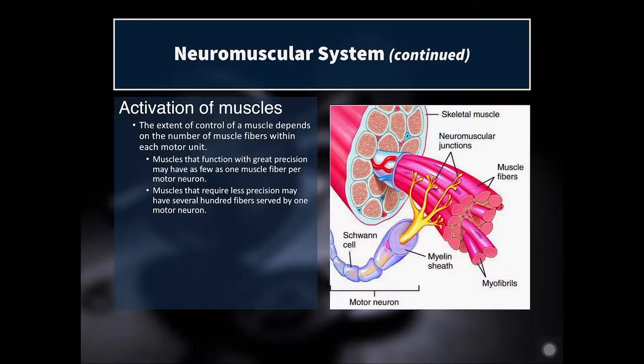This process doesn't happen in individual muscle fibers. The contractile unit of the cell is a sarcomere, but the neuromuscular unit is a motor unit. A motor unit consists of an alpha motor neuron and all of the muscle fibers that it innervates. The size of a motor unit dictates the amount of control or force production a muscle can generate. Muscles that function with great precision have very few muscle fibers per alpha motor neuron, but muscles that require less precision may have several hundred.